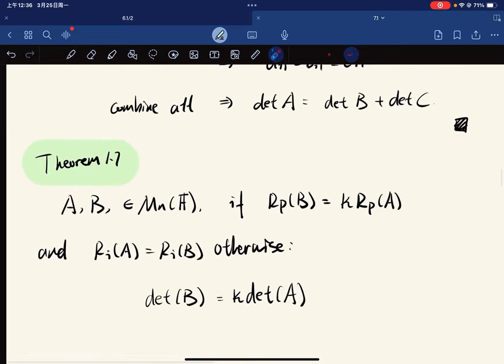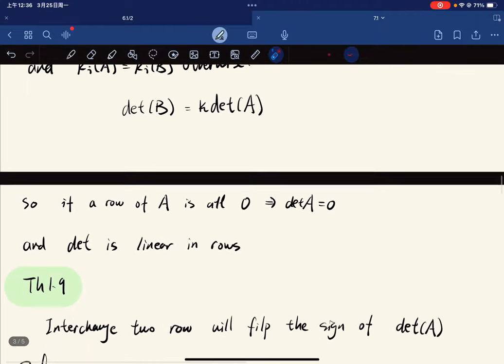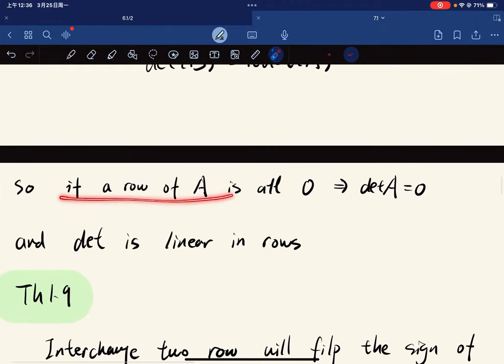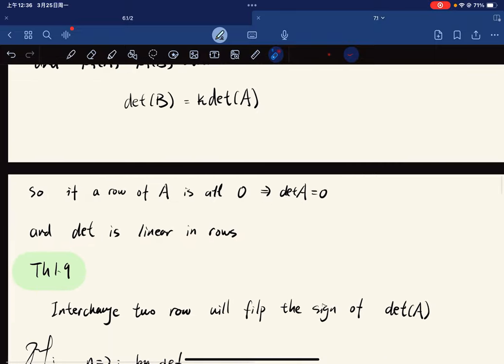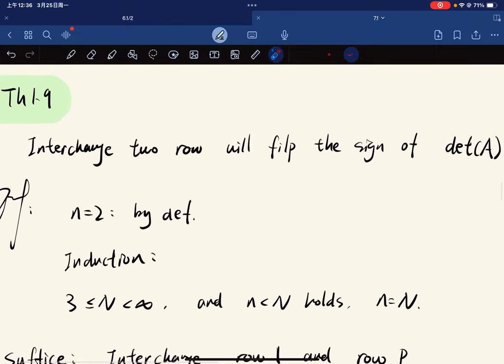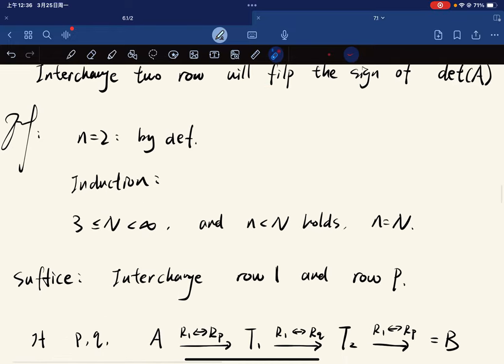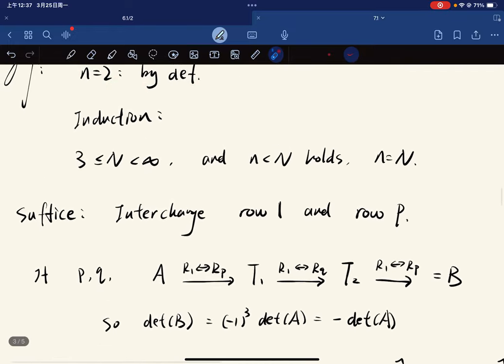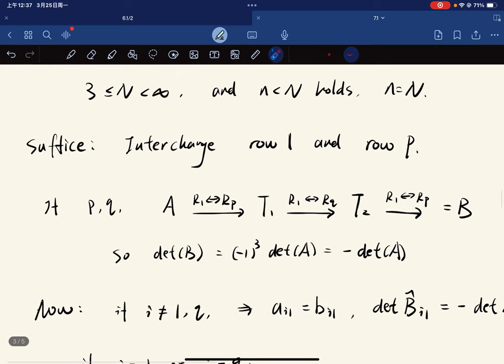Also for a scalar multiple, I just skipped the proof. So if a row of A is all zero, then the determinant should be zero. And the determinant is linear in rows. Now interchange two rows will also flip the sign of the determinant. So let's go to two. I'll just skip for induction.